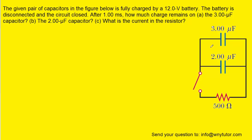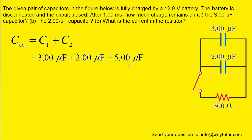What we want to notice about this circuit is that the two capacitors are in parallel with one another. We know that for parallel capacitors, the equivalent capacitance is simply the sum of the individual capacitances. So we add the capacitances together, essentially getting one equivalent capacitor with a capacitance of 5 microfarads. You can imagine that these two have been combined into just one capacitor whose capacitance is 5 microfarads.